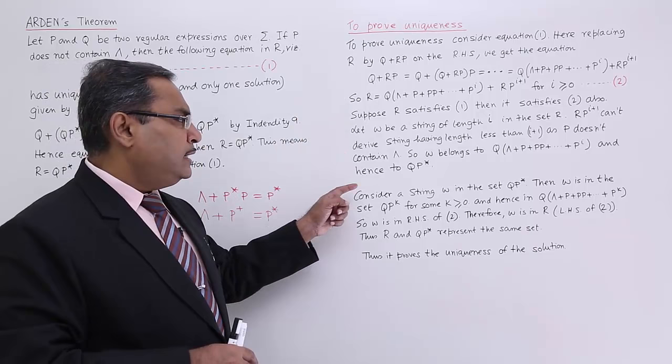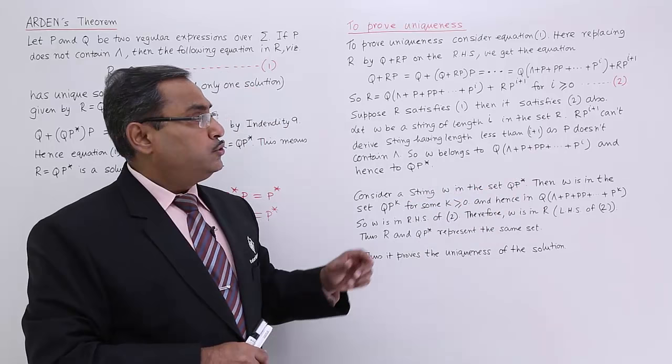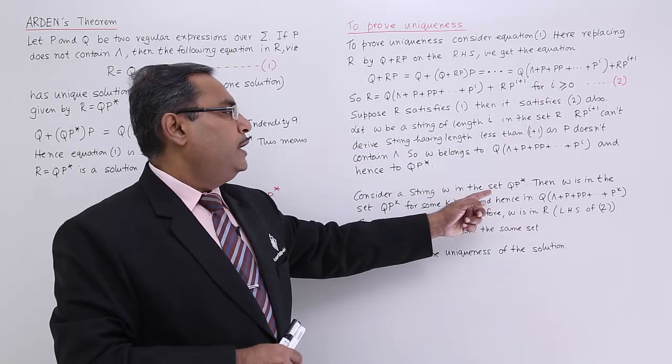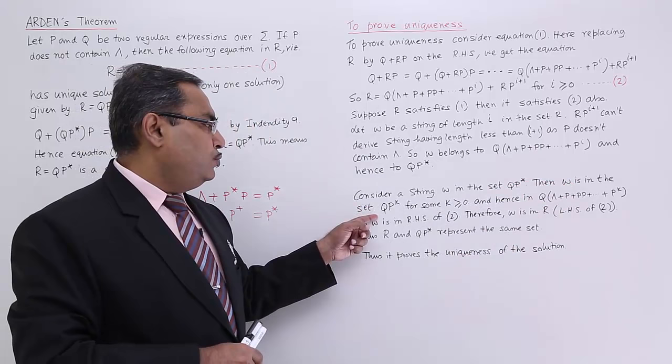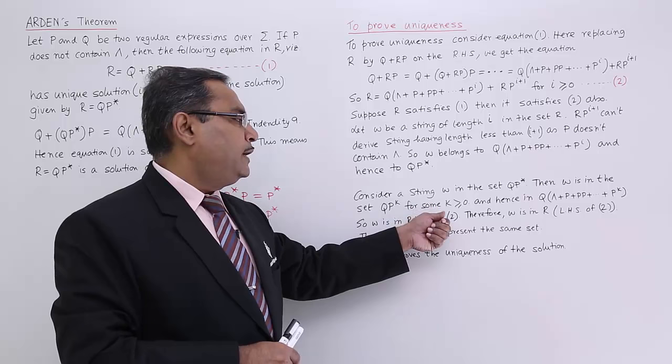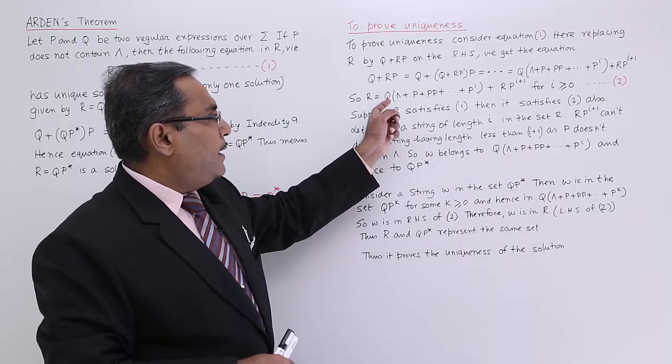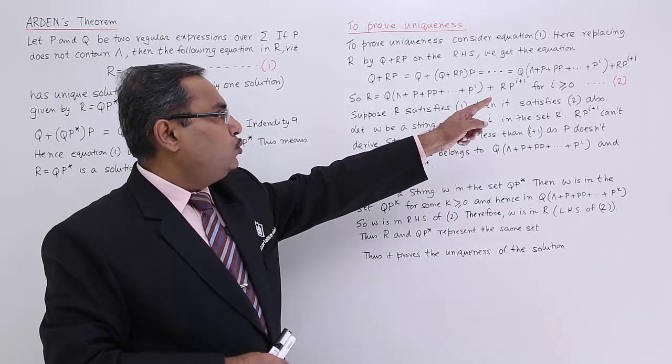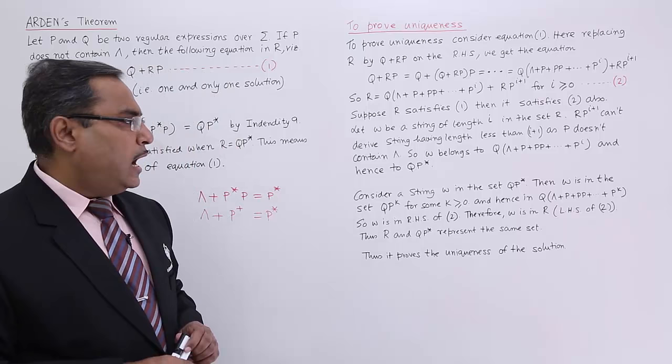For the second part, consider a string W in the set QP*. Then W is in the set QP^k for some k ≥ 0. As W is in QP^k for some k ≥ 0, W will also be in the set Q(kappa + P + PP + ... + P^i), and hence in R. So W is in the right-hand side of equation 2, and therefore W is in the left-hand side of equation 2, that is in R. Thus R and QP* represent the same set.